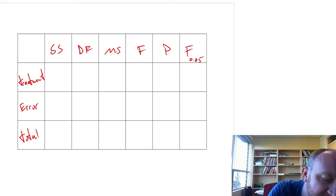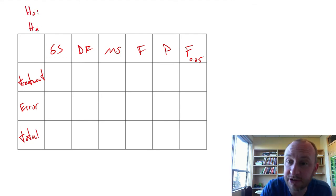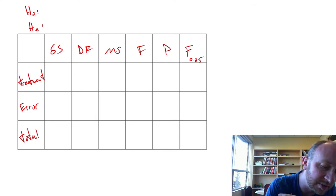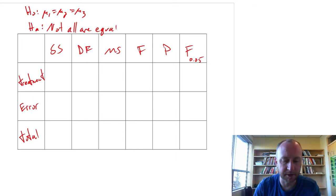And here let's put our hypotheses. So we have three treatments, so we should have three means mu1, mu2, mu3. Of course not all are equal.